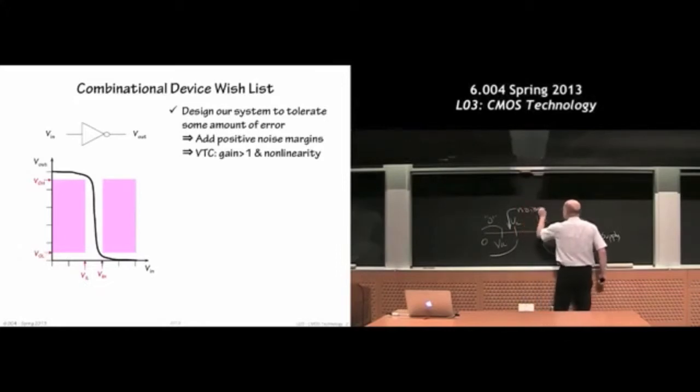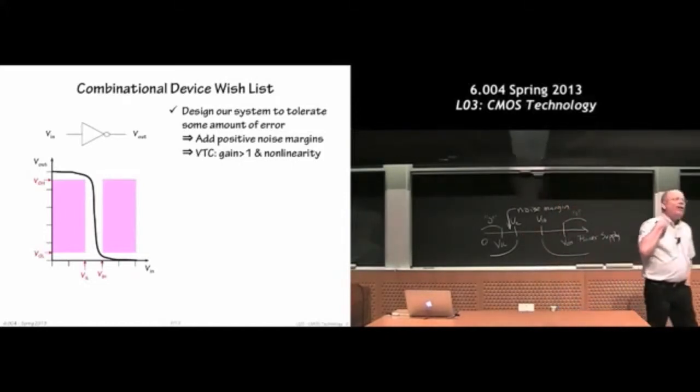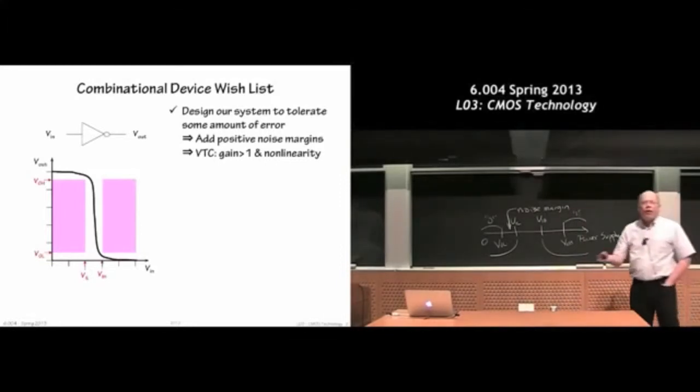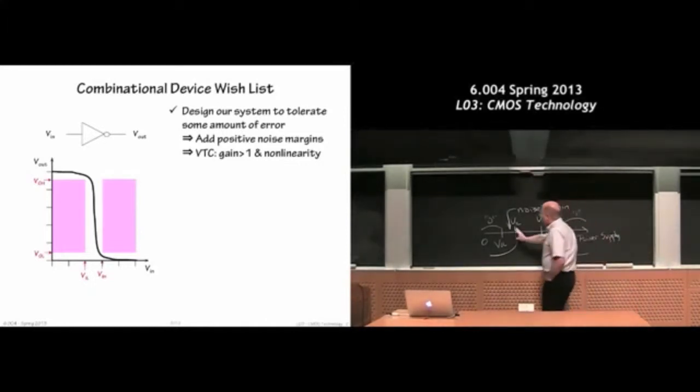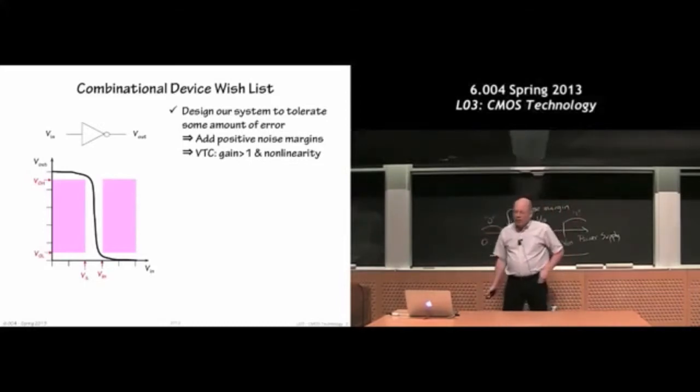The noise margin was very important because it was our ability to restore slightly flaky signals as they traveled from the output of one device to the input of the next, restoring values back to something that didn't have the noise. That's what made digital systems allow us to have this tinkertoy principle.